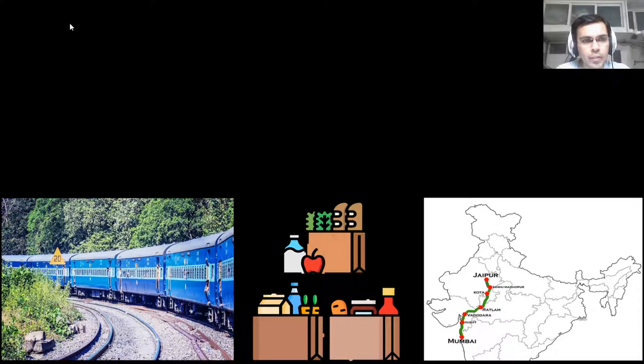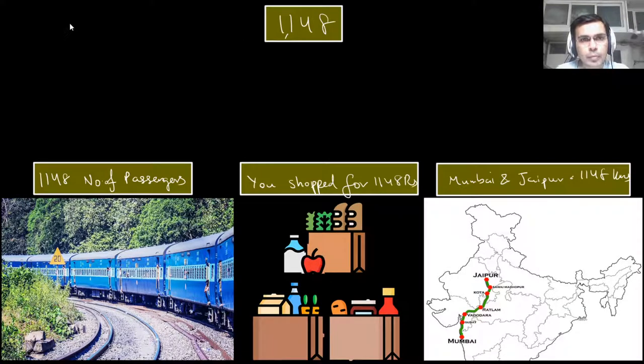So let's think of a number, let's say 1148. Now, if we need to arrive at an estimate, it actually depends on the situation in which this number is used. It could be 1148 number of passengers that a train can carry, it could be that you shop for 1148 rupees, or it could mean the distance between Mumbai and Jaipur. In these three different situations, the estimates would be different. Let's take a look.